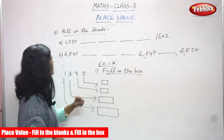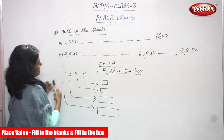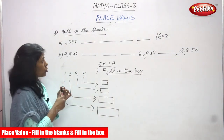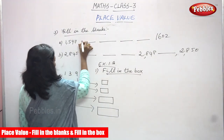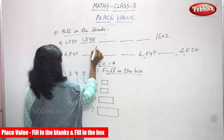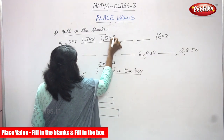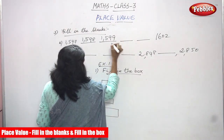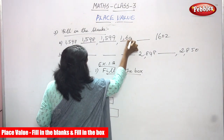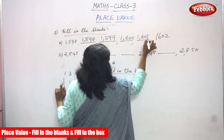Now you're going to see fill in the blanks. The first one is 1597, up to 1602. You have to fill in the blanks. So 1598, after that 1599, next 1600, next 1601.